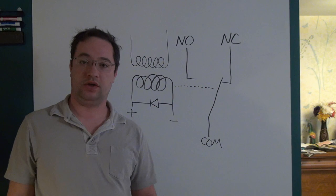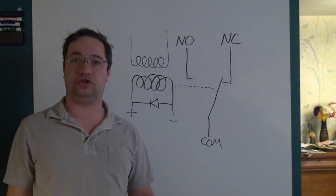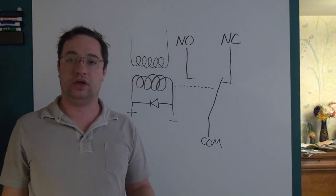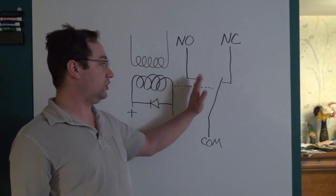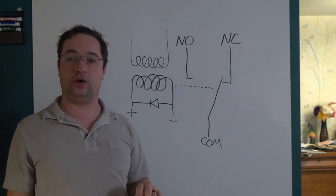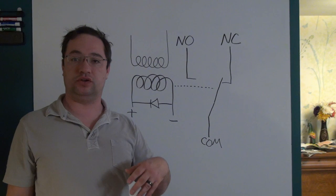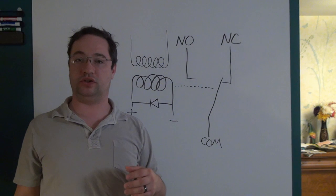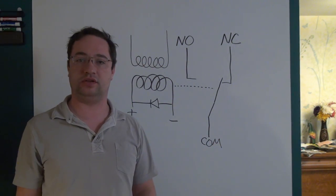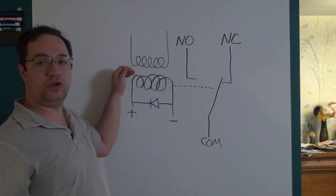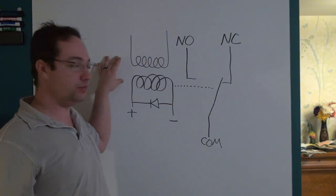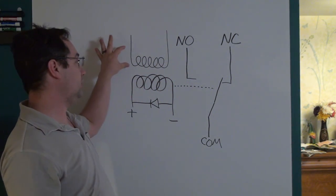Something to note with contactors: they will sometimes have two coils instead of one on the control side. The reason is that it is far easier to hold the arm once it has switched than to actually pull the arm over. So the relay has a pull-in coil and a hold coil. When both are energized at the same time, the arm comes over, but once the arm is fully over, the pull-in coil gets turned off. This saves power so the control circuitry doesn't have to be as beefy.